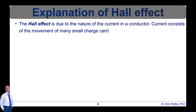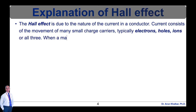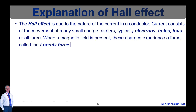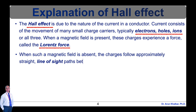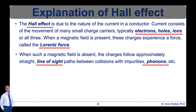Current consists of the movement of many small charge carriers — typically electrons, holes, ions, or all three. When a magnetic field is present, these charges experience a force called the Lorentz force. When such a magnetic field is absent, the charges follow approximately straight line-of-sight paths between collisions with impurities, that is, phonons, etc. Please do not get confused between photon and phonon.